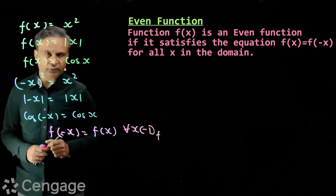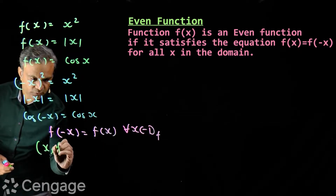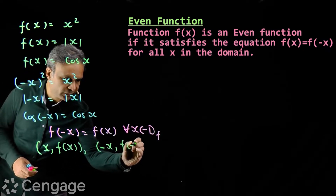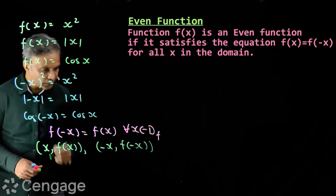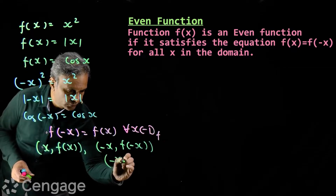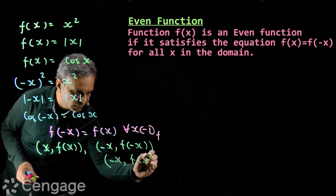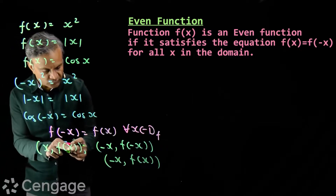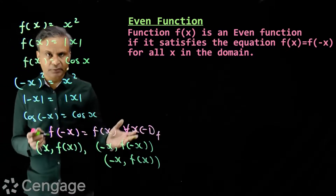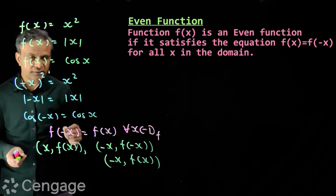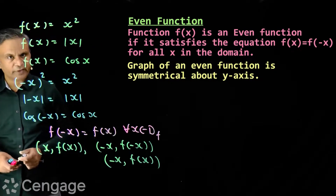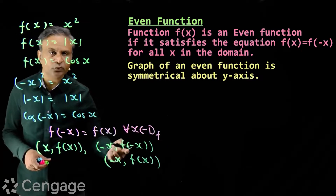Now consider two points on the graph of an even function having coordinates (x, f(x)) and (-x, f(-x)). Since the function is even, f(-x) = f(x), so the coordinates of this point will be (-x, f(x)). These two points are symmetrical about the y-axis. That means the graph of an even function will be symmetrical about the y-axis. This is true for all x belonging to the domain of the function.